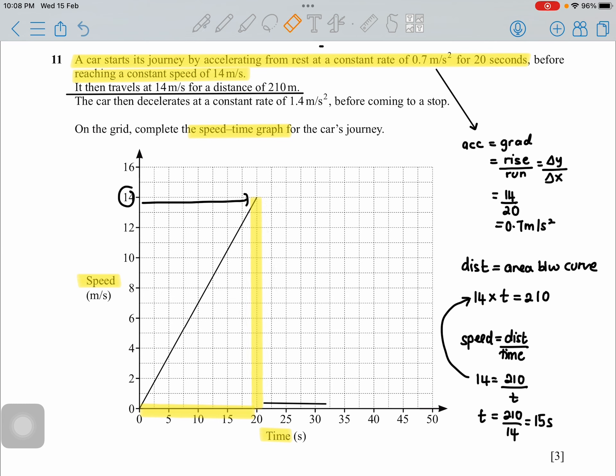You need to travel for another 15 seconds so that your distance covered is 210. You are stopping exactly at 20 seconds here. Add another 15 seconds to that, you will go until 35 seconds. So you just make a flat line until here.